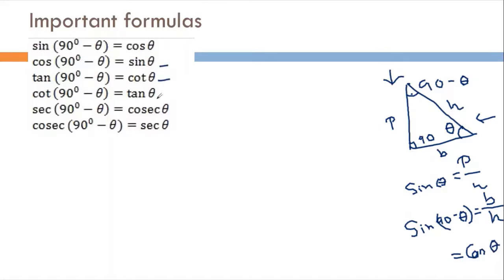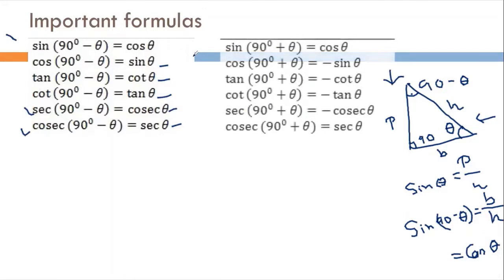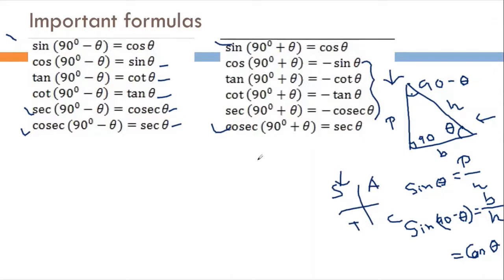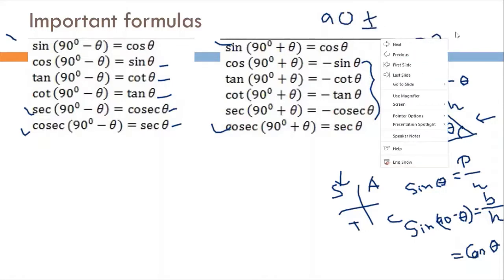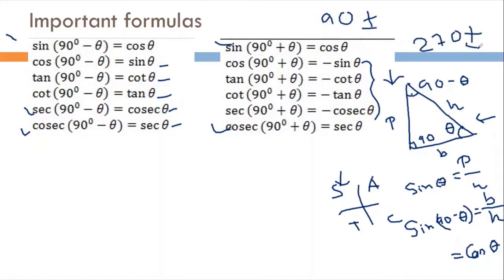Now, for 90 plus or minus theta — this is an odd multiple — the sin will change to cosine, and cosine will change to sin. In the second quadrant, sin is positive. Using the ASTC rule: A, S, T, C — sin is positive in the second quadrant, and sin is negative in the third and fourth quadrants. So, at 270 plus or minus, the sign is negative; at 90 plus or minus, sin changes to cosine.